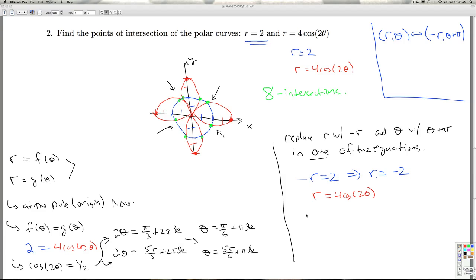I get 4 cosine 2 theta is negative 2. So cosine of 2 theta is negative 1 half. And so that means that 2 theta is either 2 pi over 3 plus 2 pi k or 2 theta is 4 pi over 3 plus 2 pi k. So out of this, I get theta equals pi over 3 plus pi k, or theta is 2 pi over 3 plus pi k. If you run through those, that's going to get you these other ones.